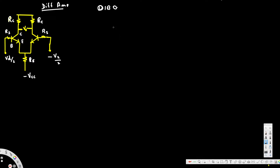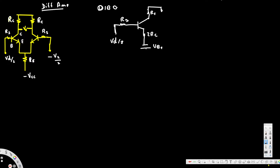Here we have Vd/2 and Vd/2 as input voltages, and the resistance here is Rs. We also have Rs again on the other side. Then here we will have 2Rc and 2Rc, and this voltage is Vbc. This is the equivalent model for the same circuit I'm drawing.